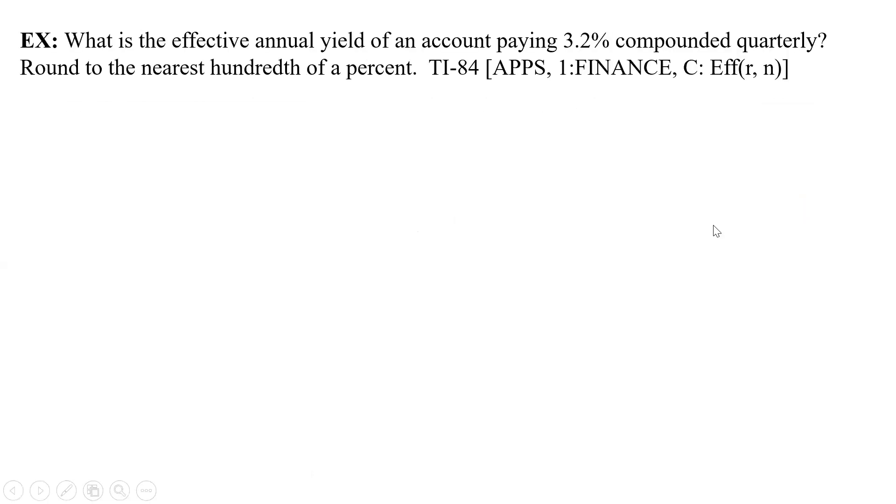Here we go. What is the effective annual yield of an account paying 3.2% compounded quarterly? Quarterly, that's going to be N equals 4. Now let's write our equation again so we don't forget it. Y equals 1 plus R over N to the power N minus 1. Now we're also going to look at how to do this on your calculator in a little bit. But first we're going to do it just plugging and chugging. We're going to have 1 plus our rate, which is 0.032 divided by N, which we said was 4, raised to the power of 4 minus 1.